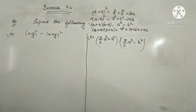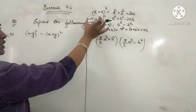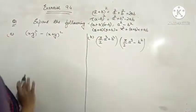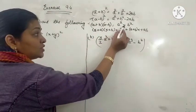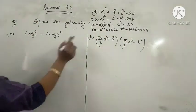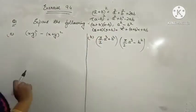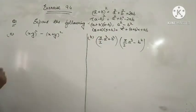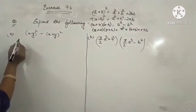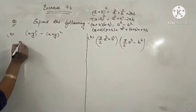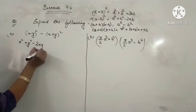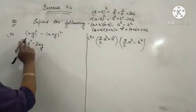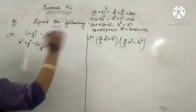Let's start with part E. This part can be done in two ways. One way is to use the formula of A minus B whole square and A plus B whole square. Another way is to use A squared minus B squared. I will tell you both ways. First, I am using the formula of A minus B whole square: A squared plus Y squared minus 2XY, replacing A by X and B by Y.